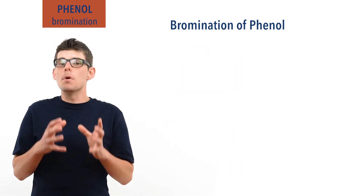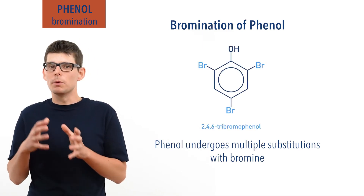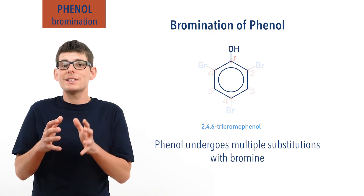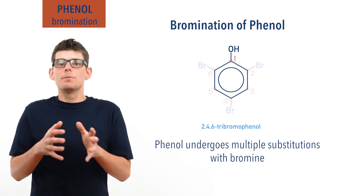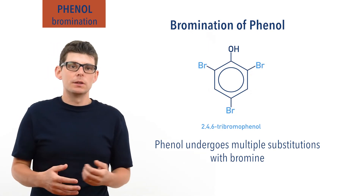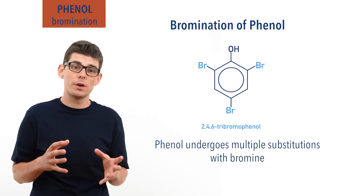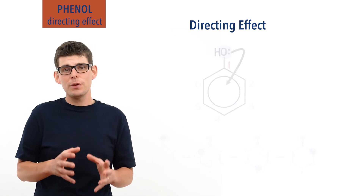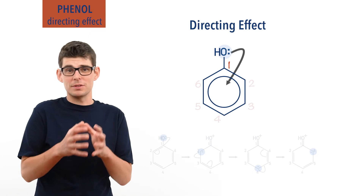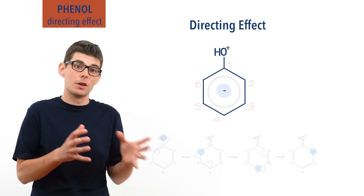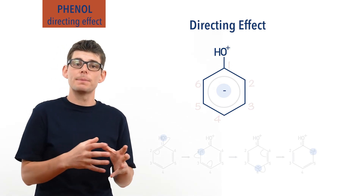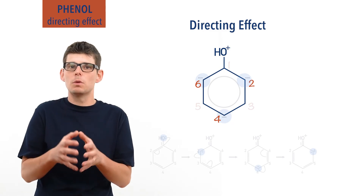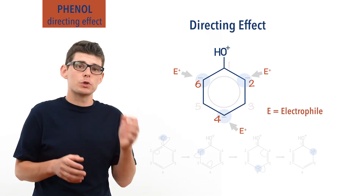Phenol is also able to undergo multiple substitutions of bromine and will end up forming the product 2,4,6-tribromophenol. The 2,4,6 refers to the carbon atoms bromine gets bonded to; carbon 1 in phenol is always considered to be the carbon bonded to the OH group. The reasons carbons 2, 4, and 6 are always chosen is due to what is called the directing effect of the OH group. In simplified terms, a lone pair of electrons from the oxygen gets fully donated into the pi bonding system, giving the oxygen atom a positive charge. There is now a negative charge from that lone pair of electrons that can be moved around the structure and, due to the bonding system in the benzene ring, this can end up at either carbon 2, 4, or 6. The negatively charged carbon atom is always the one most likely to react with an electrophile, and this is why substitution occurs at carbons 2, 4, and 6.